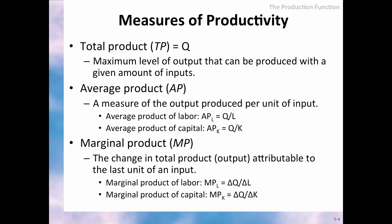Given a production function, it is useful to compute three measures of productivity. First, total product, which is Q. Second, average product, which is a measure of the output produced per unit of input — you can calculate average product of labor, APL, and average product of capital, APK. Third, marginal product, which is the change in total output when a given input changes by one unit — you can calculate marginal product of labor, MPL, and marginal product of capital, MPK. You can see a numerical example in the For Further Studies section.